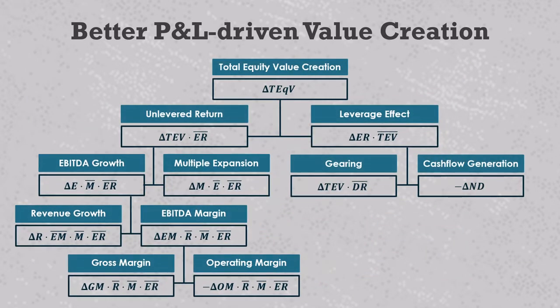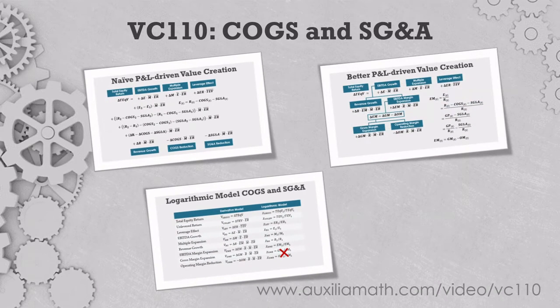Here are all the value drivers represented in schematic form. The total equity return breaks up into the unlevered return and the leverage effect. The leverage effect breaks into gearing and cash flow generation. The unlevered return breaks into EBITDA growth and multiple expansion. EBITDA growth breaks up into revenue growth and EBITDA margin expansion, and EBITDA margin expansion breaks up into gross margin expansion and operating margin reduction. This really is the best way to measure how margins and COGS and SG&A drive private equity returns in the derivative model of value creation. Notice that we didn't need to do any calculus here — that's because there's a simple addition and subtraction relationship between the EBITDA margin, gross profit margin, and operating expense margin. That simplifies the derivative model, but it tends to complicate things in the logarithmic model, as we shall see in the next section.